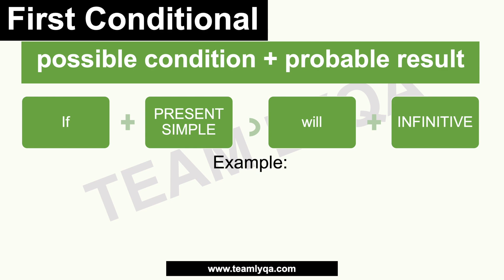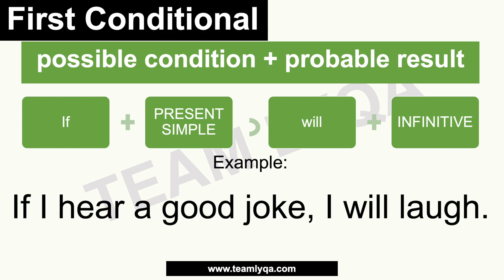For the first conditional, it can look like this — using the same idea as before: 'If I hear a good joke, I will laugh.' The difference from zero conditional is the word 'will.' This is a probable result — it's going to happen in the future. You're not just stating a fact; you're saying, 'If you tell me a good joke, I will laugh.' There's a different feeling from the zero conditional, which is just a statement of fact.